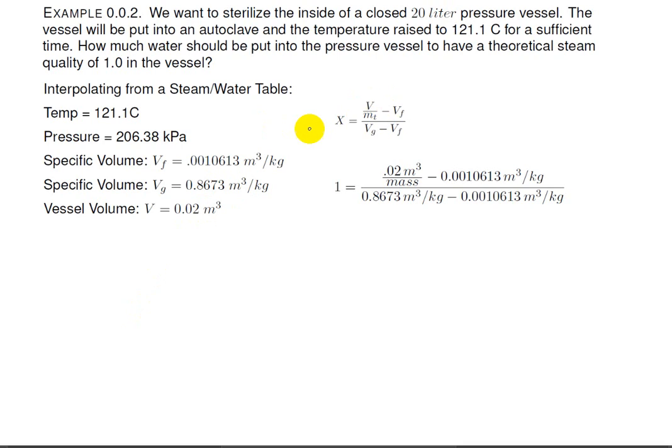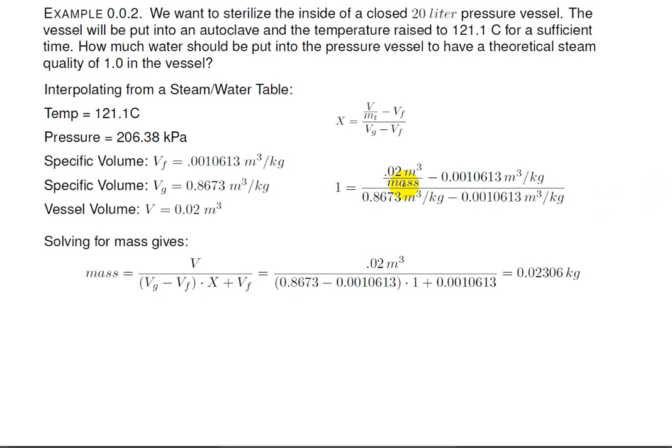Now, our guiding equation is this fraction right here, and so what we want to do is plug everything in. Well, I plug in 1 for the theoretical steam quality. There's the vessel volume. Mass is what I don't know. Total mass, how much water to put into the can is what I don't know, and then I use VF, VG, and VF.